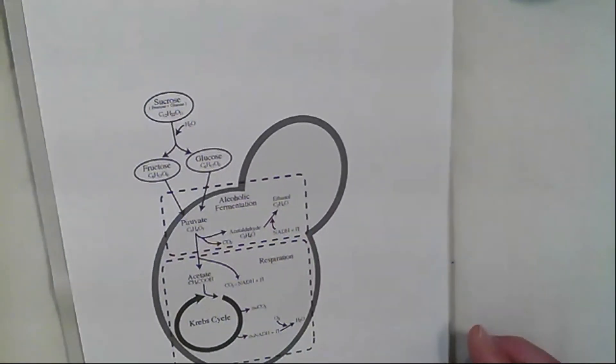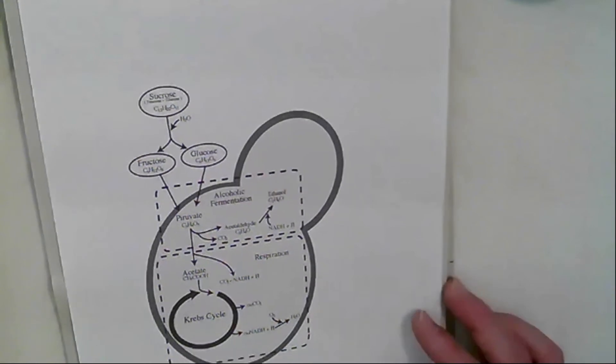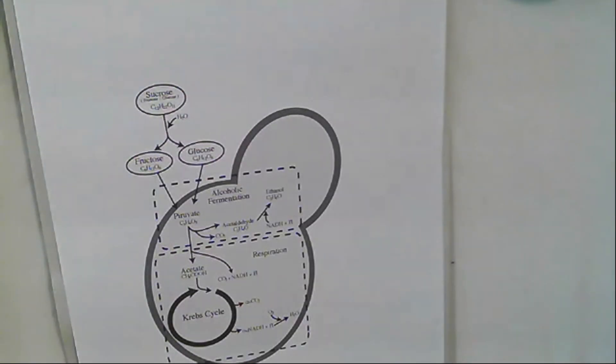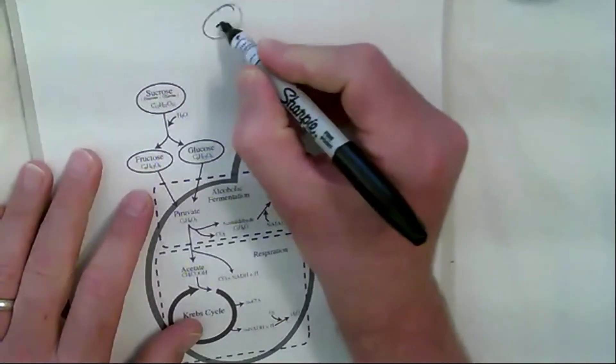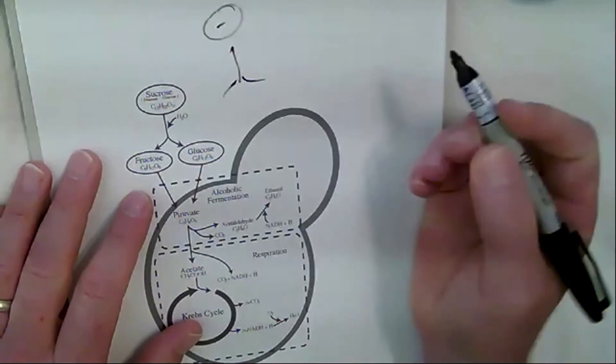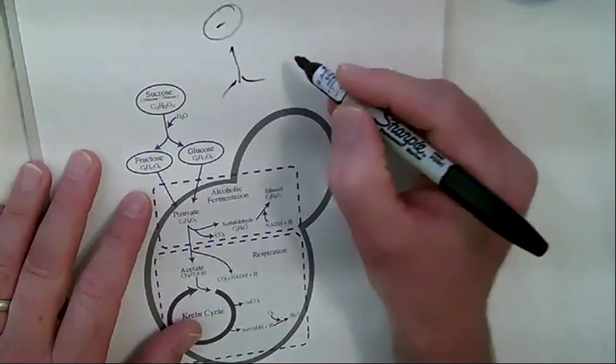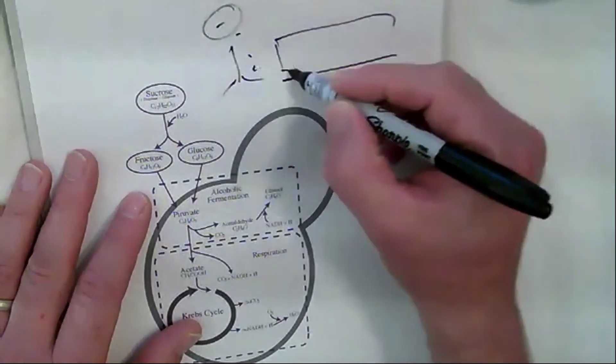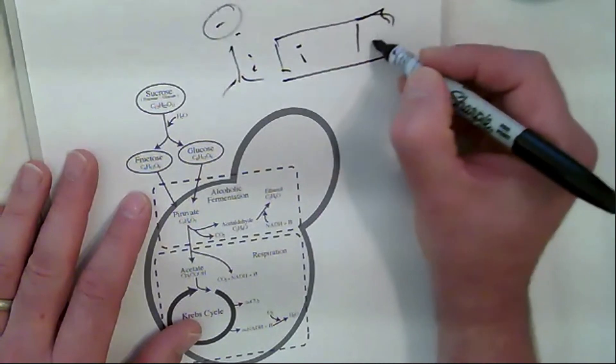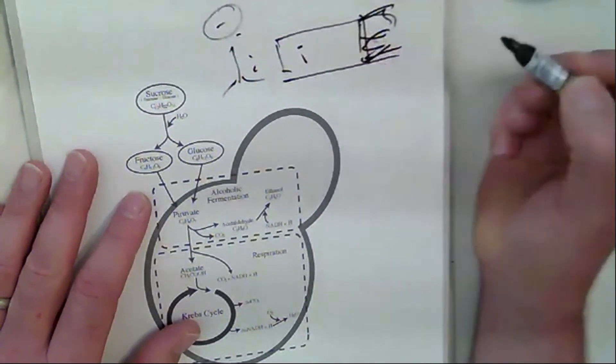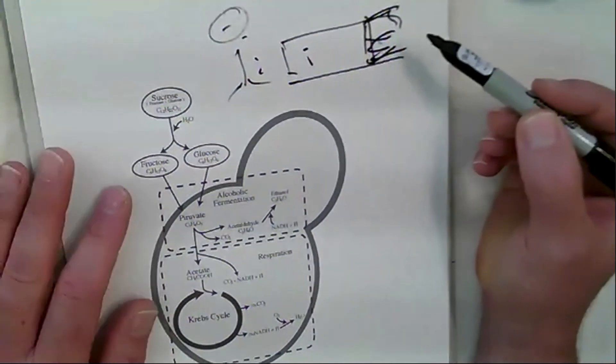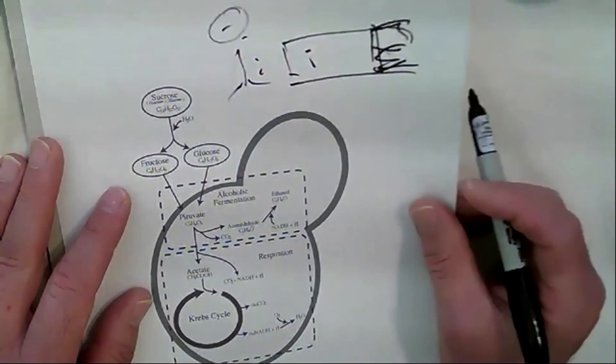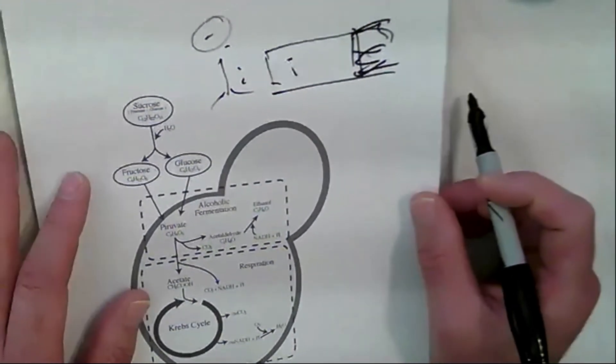The exam has two parts. I'm gonna want you to write this out and talk about it, just as I have been talking about it and describe it. So you're gonna be building a video not too unlike what I'm building right here, where you talk about the process and show me that you understand that yeast are the catalyst between sucrose and ethanol.